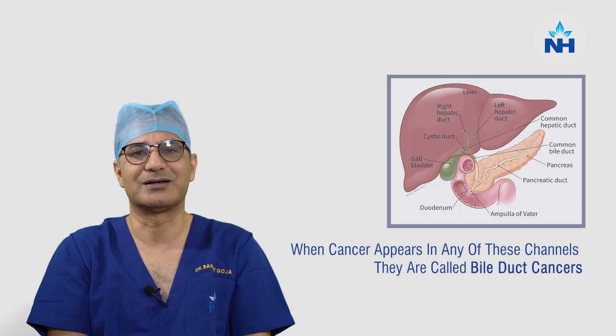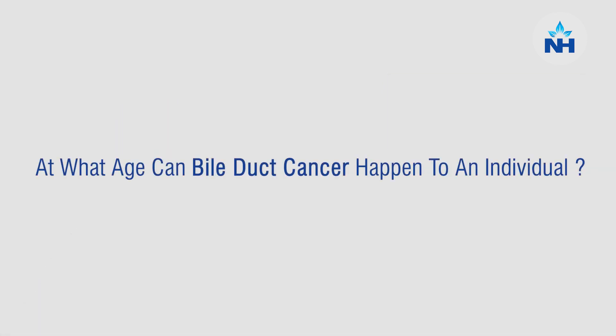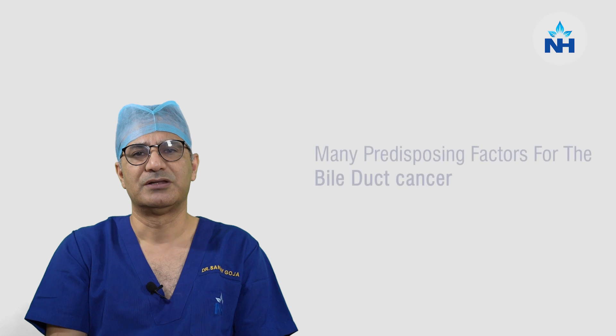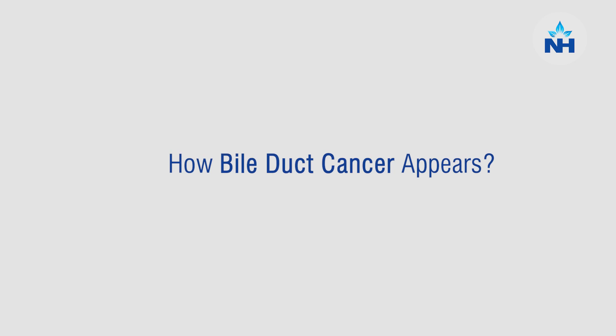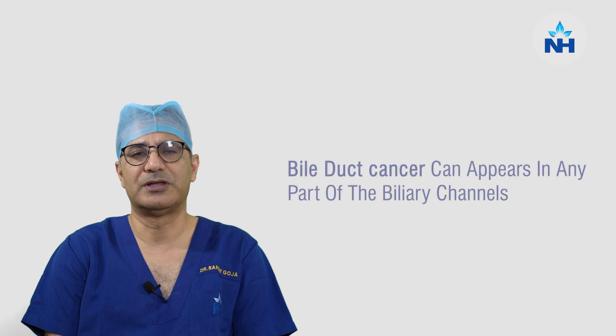When cancer appears in any part of this channel, they are called bile duct cancers. Bile duct cancers usually occur around age 50 and after. There are many predisposing factors for bile duct cancers, and bile duct cancer can appear in any part of the biliary channel.